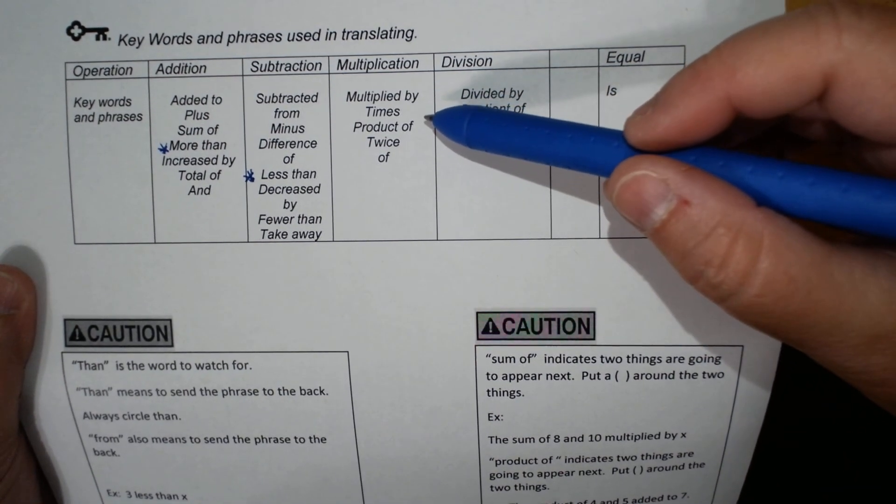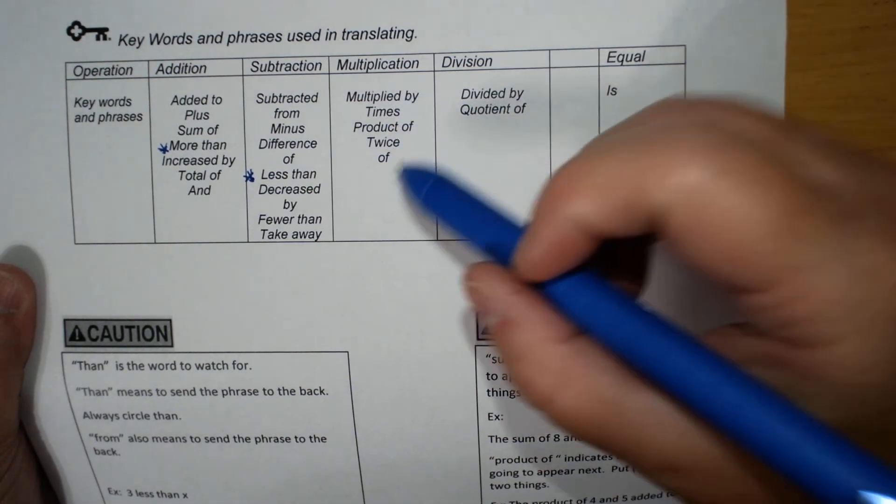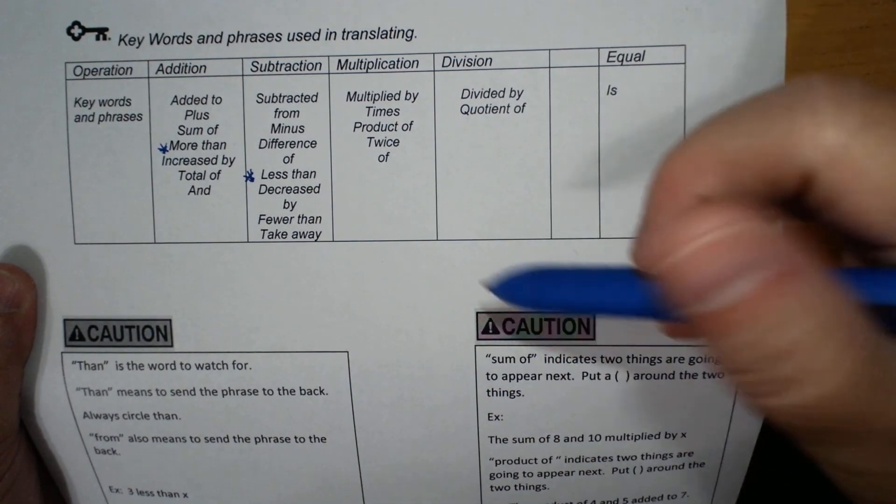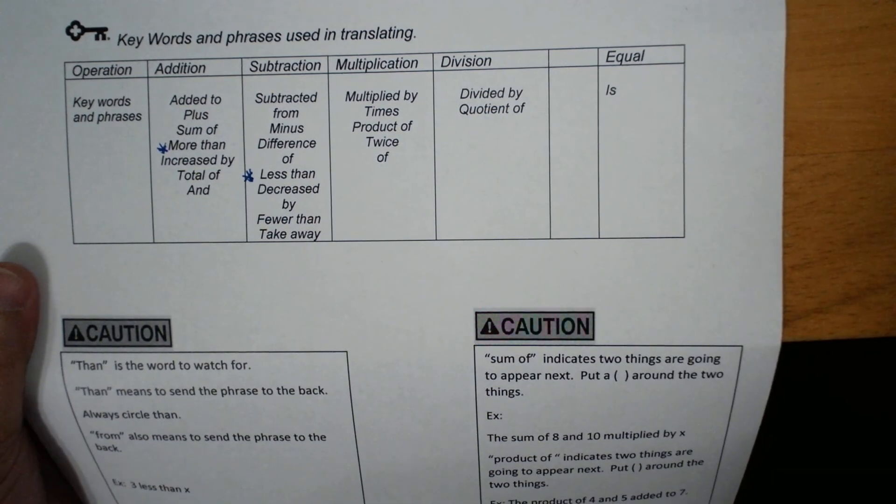Multiplication is multiplied by, times, product of, twice, and just the word of. This, you're going to just have to pay attention.